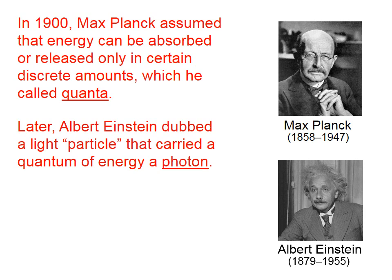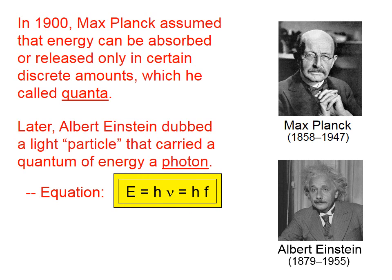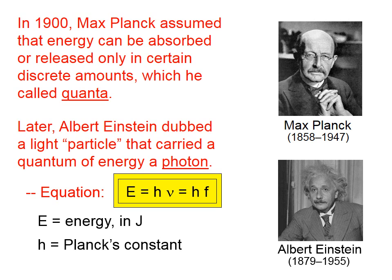Later, Albert Einstein dubbed a light particle that carried a quantum of energy a photon. The equation that relates energy to frequency is E = hf — where frequency again appears in two forms: lowercase Greek nu or lowercase f, and I prefer f. E is the energy of a photon in joules, the standard SI unit for energy. H is Planck's constant: 6.63 times 10 to the negative 34th joule-seconds, or joules per hertz. Since a hertz is seconds to the minus one, joule-seconds and joules per hertz are the same unit.